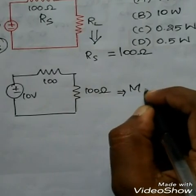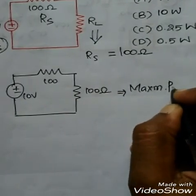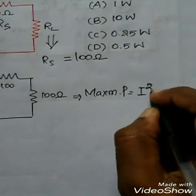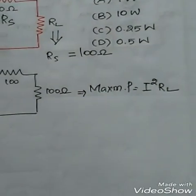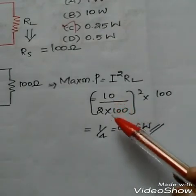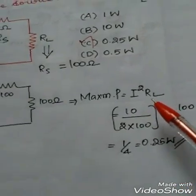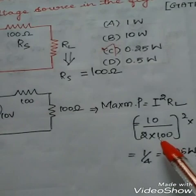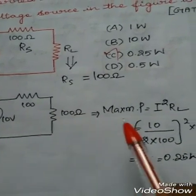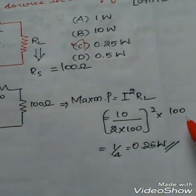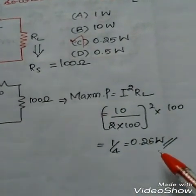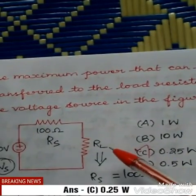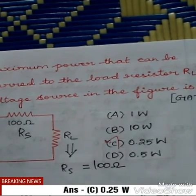Now to find the maximum power. The formula for maximum power is I squared into RL. The current I is the same for a series circuit. How to find the value of I? I equals V divided by RT, that is 10 divided by 100 plus 100, which is 2 times 100 squared into 100. The value of maximum power will be 0.25 watt. This is the way to find the maximum power delivered to a load — 0.25 watt is the answer.